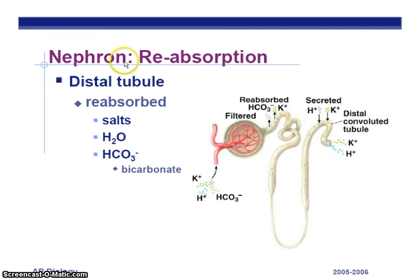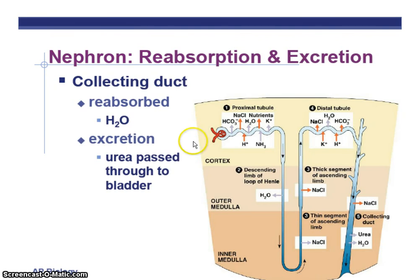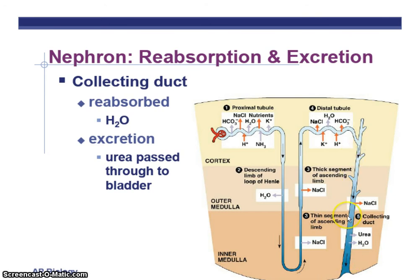In the distal tubule — think distant tubule — we have salts, water, and bicarbonate reabsorbed. It's pretty much like the proximal tubule except glucose was already reabsorbed there. Then the last step is to reabsorb water in the collecting duct, which is going to be permeable to water. Its permeability to water will differ depending on conditions. If it's very dry out, you have a low amount of water in your body and you'll be collecting more water from the collecting duct to conserve water. Likewise, if you drink too much water, the collecting duct becomes less permeable to water so that you excrete the excess. The main role of the collecting duct is to reabsorb water. Urea, water, salts, and extra sugars are now found in the collecting duct — and this is how urine is made.